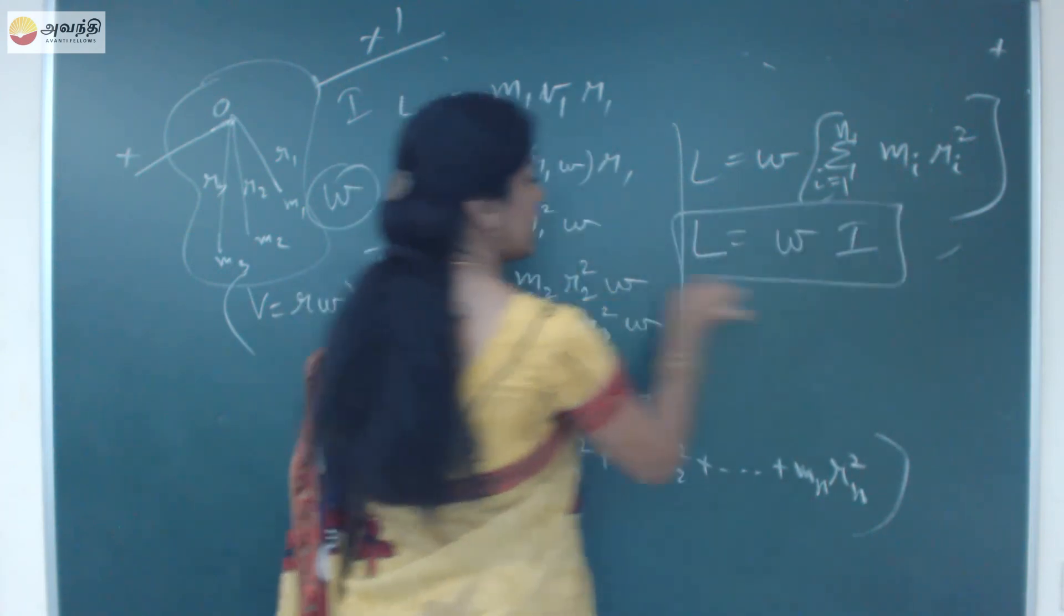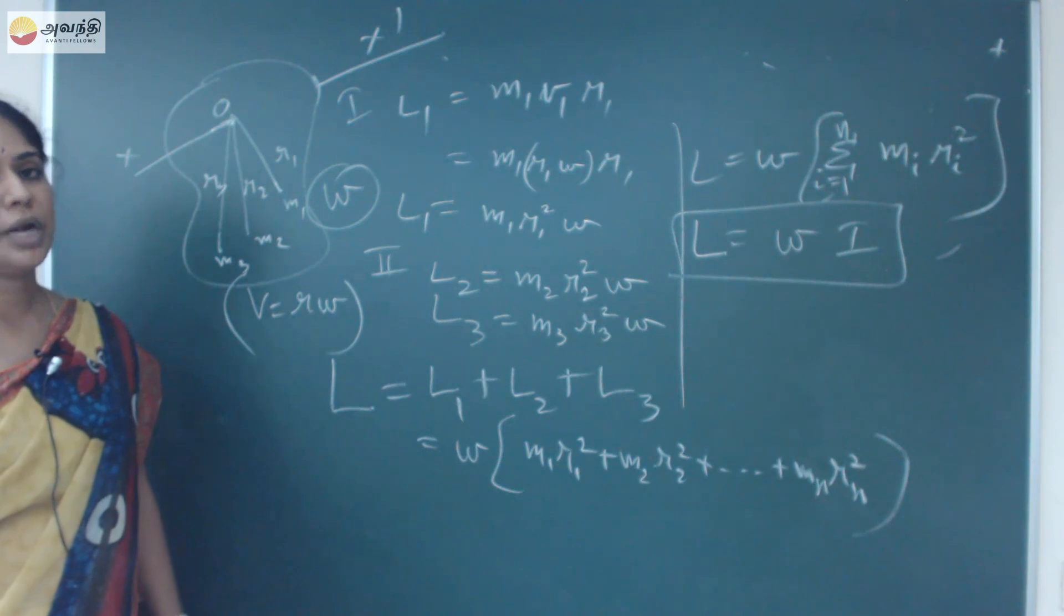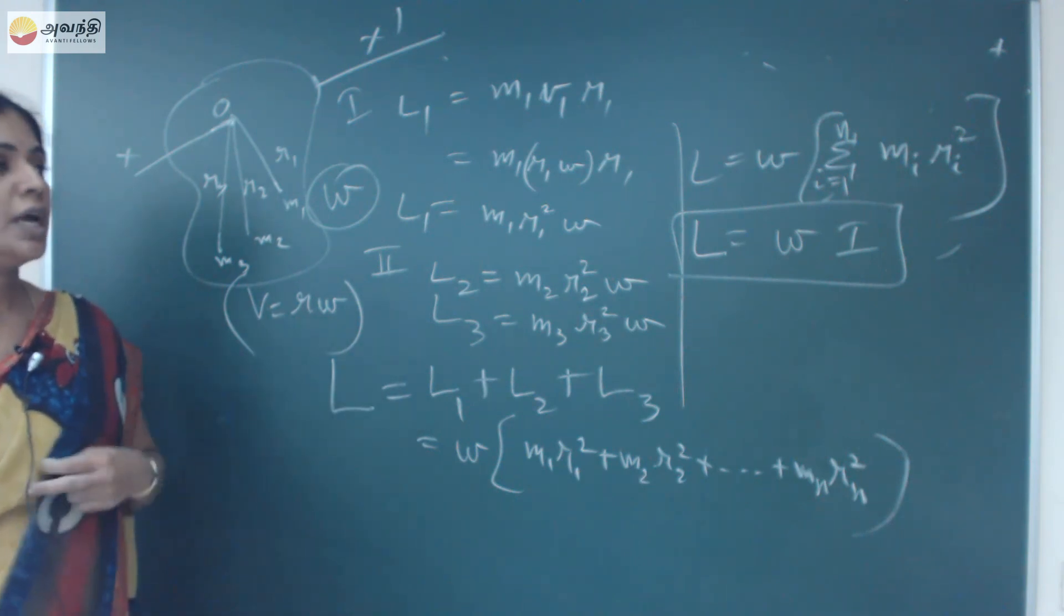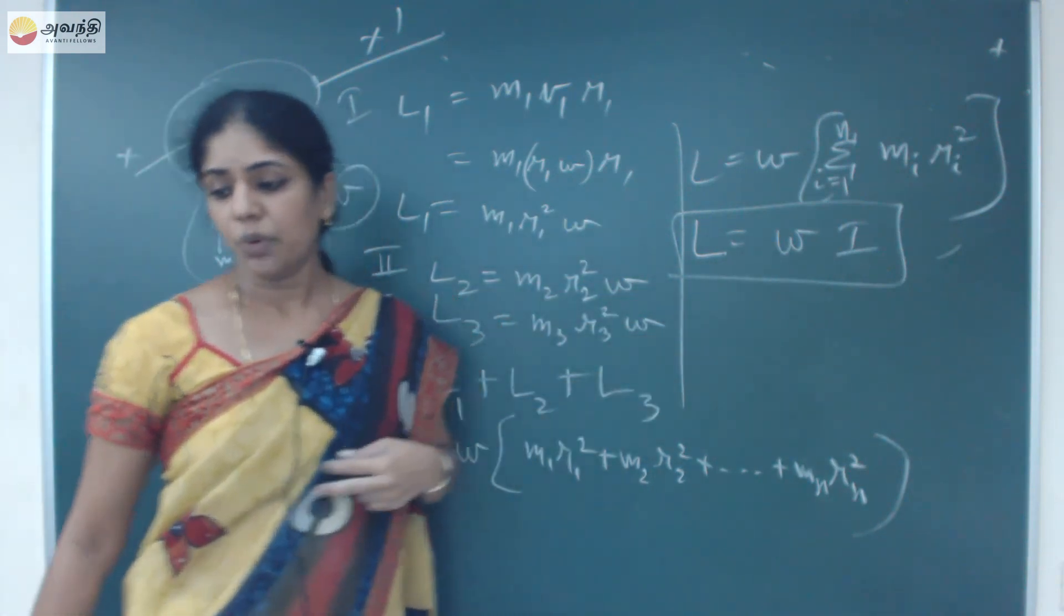So L equals I omega. By this, I can easily find out the angular momentum of a rotating rigid body. Linear momentum P equals Mv. Angular momentum L equals I omega.